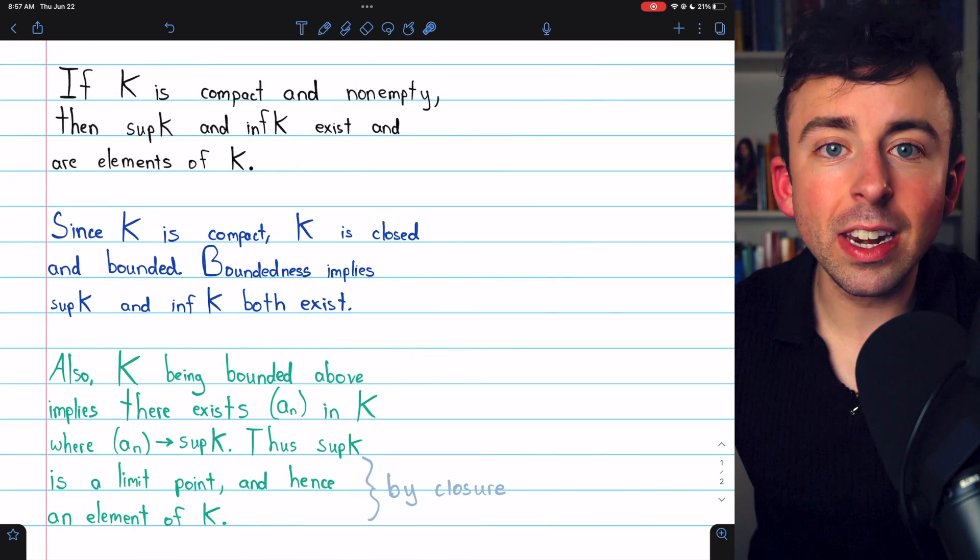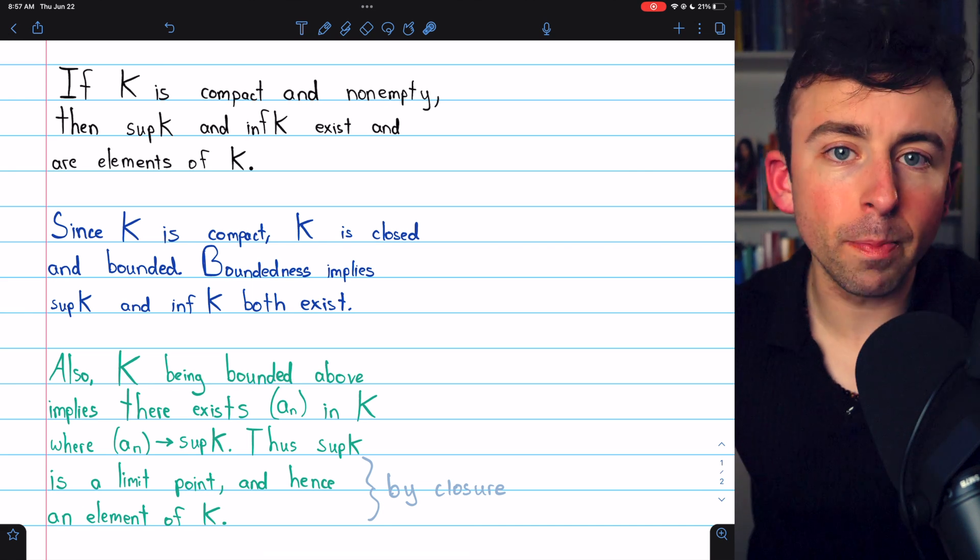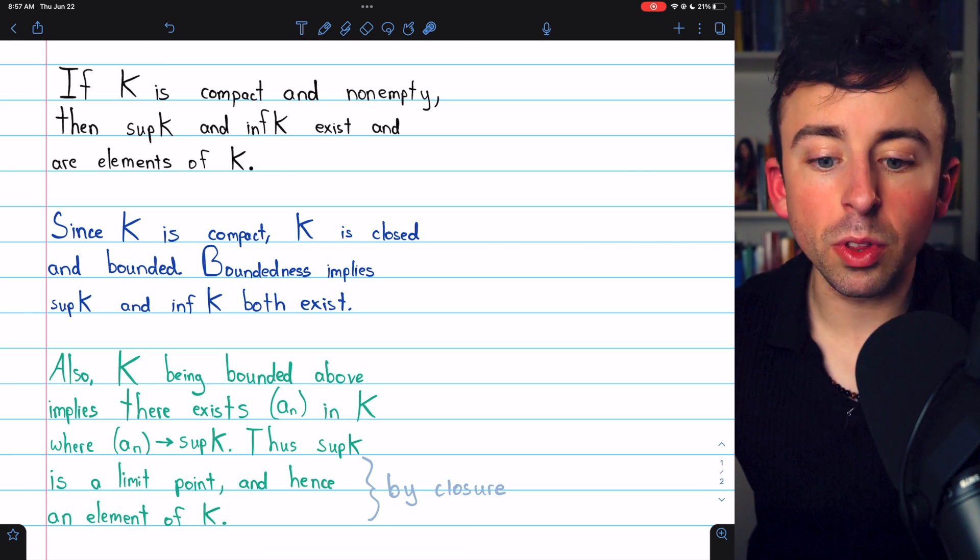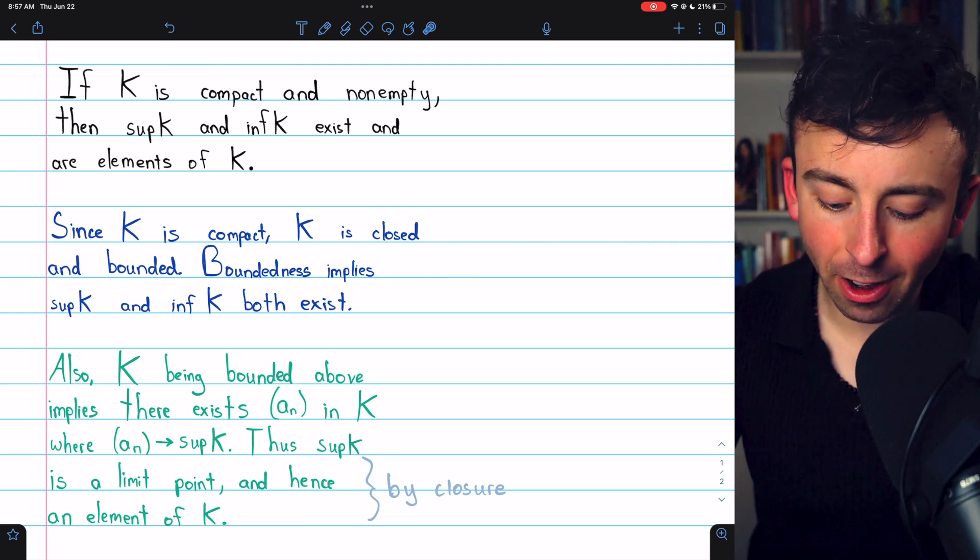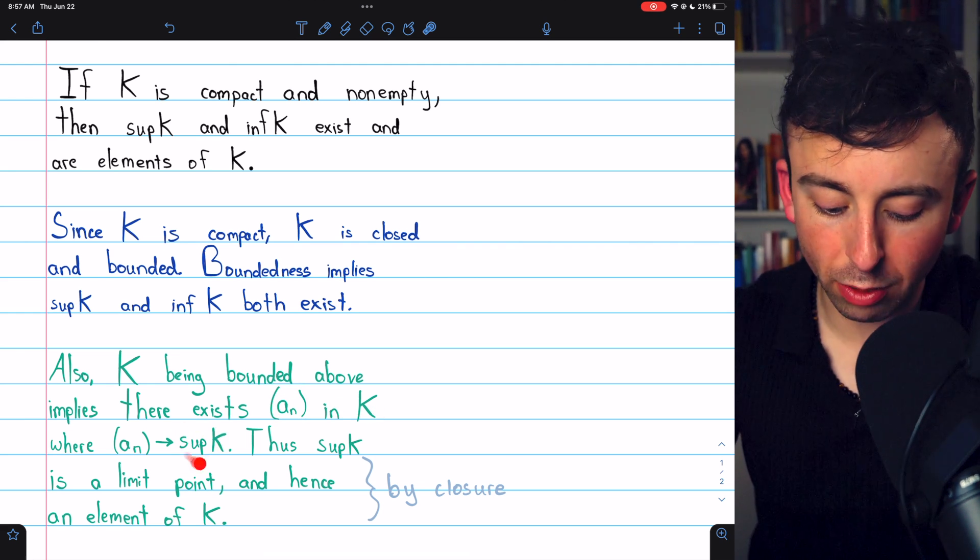Now, we have to use another prior result, link in the description to the proof. The fact that K is bounded above not only means that it has a supremum, but also that there is a sequence entirely contained in K that converges to the supremum.